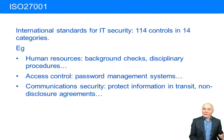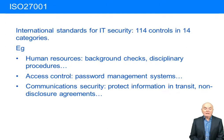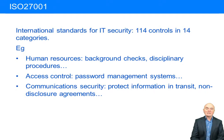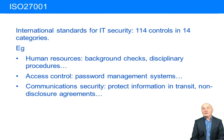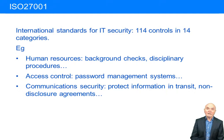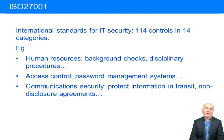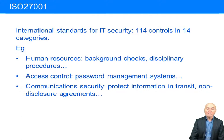I'll mention briefly here — there's more in the text — ISO 27001. It's an international standard for IT security. There are 14 categories and 114 controls mentioned in this. You will not be required to know all of these 114 controls; it's more that you'd be required to have an idea of the sort of things it looks at. Three out of the 14 categories covered here: human resources.